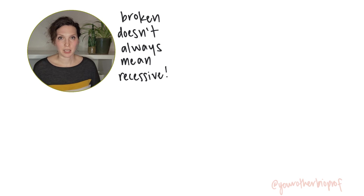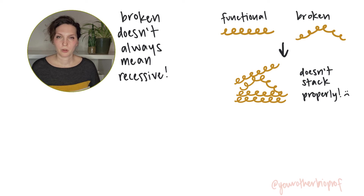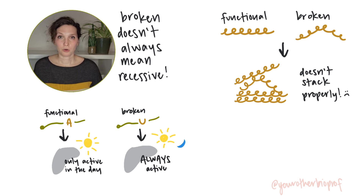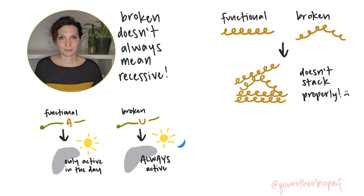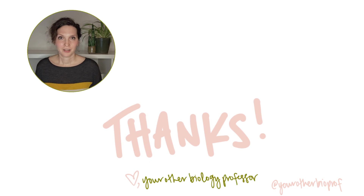A broken allele can be dominant sometimes. Imagine a scenario where a broken protein interferes with a functional one, preventing it from doing its job, or a case where a broken allele produces a product that has a new function or that functions in the wrong place or at the wrong time. These could be dominant effects. Whether an allele is dominant or recessive is determined by how that allele functions in combination with another allele and how that impacts the phenotype.